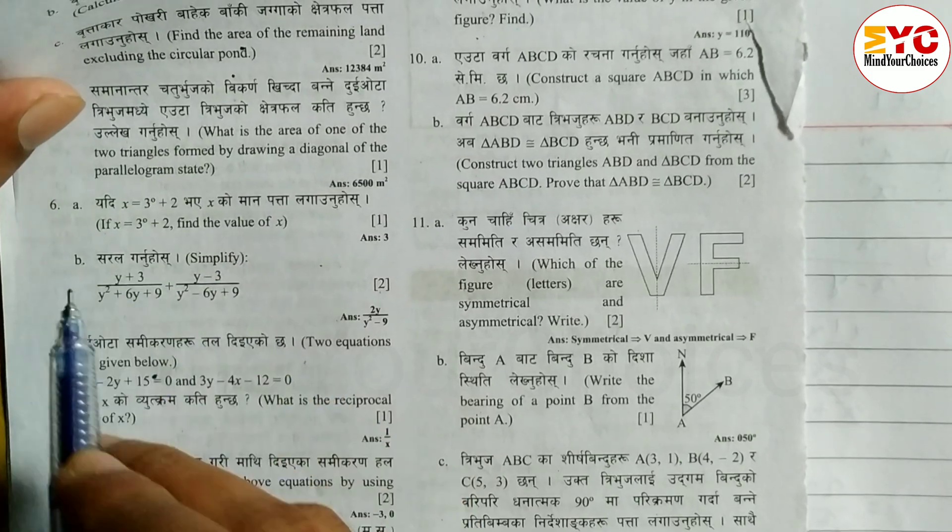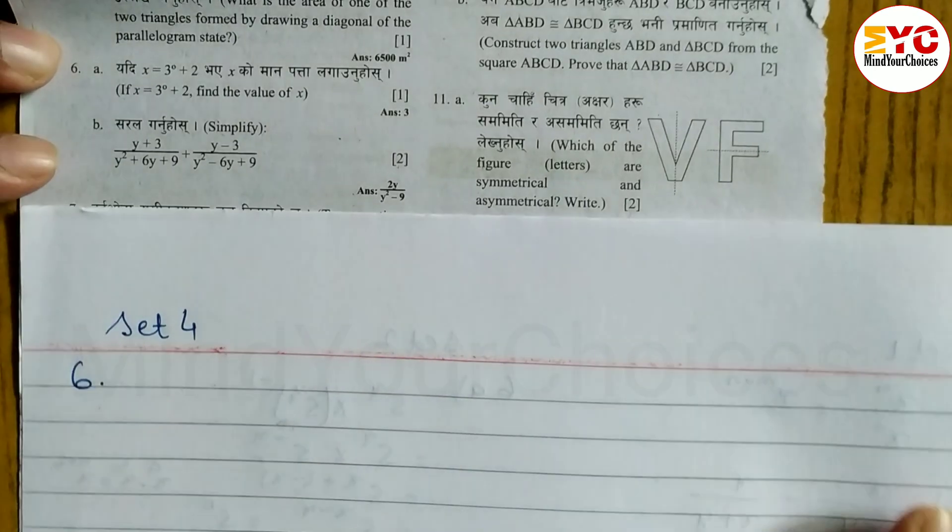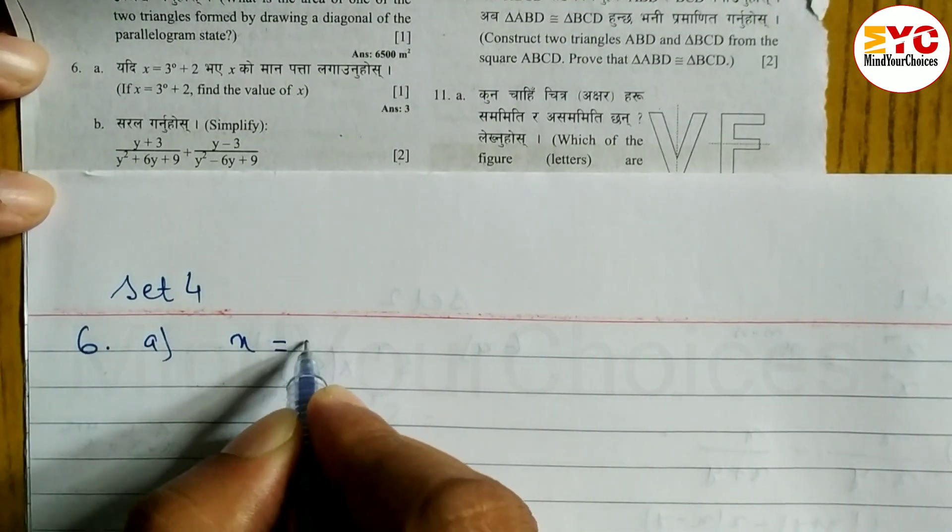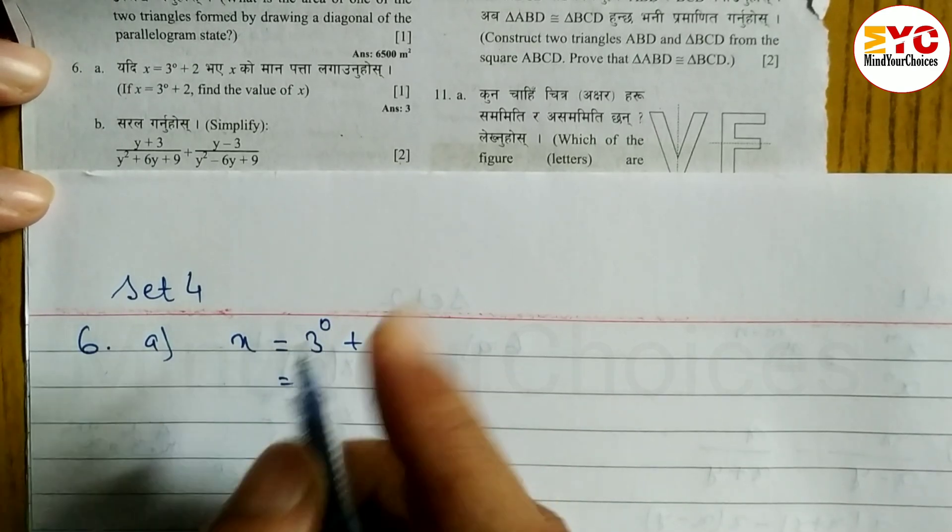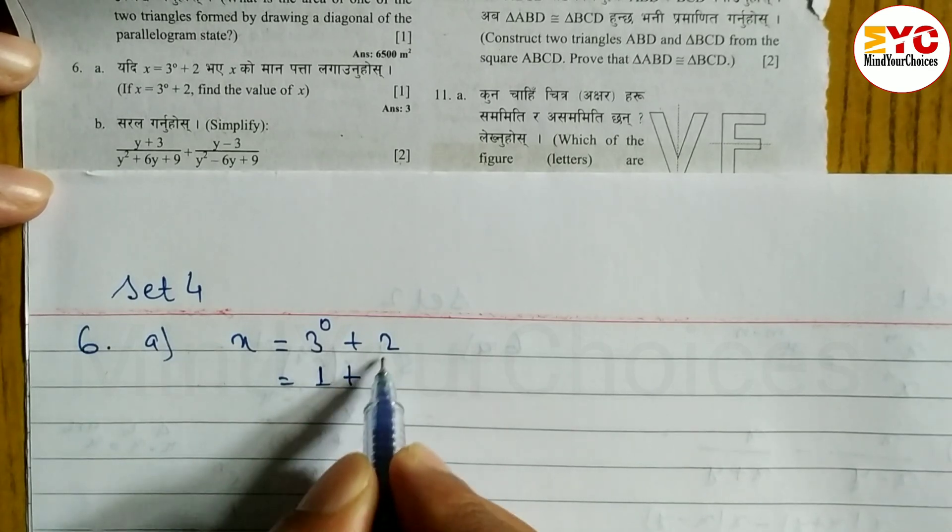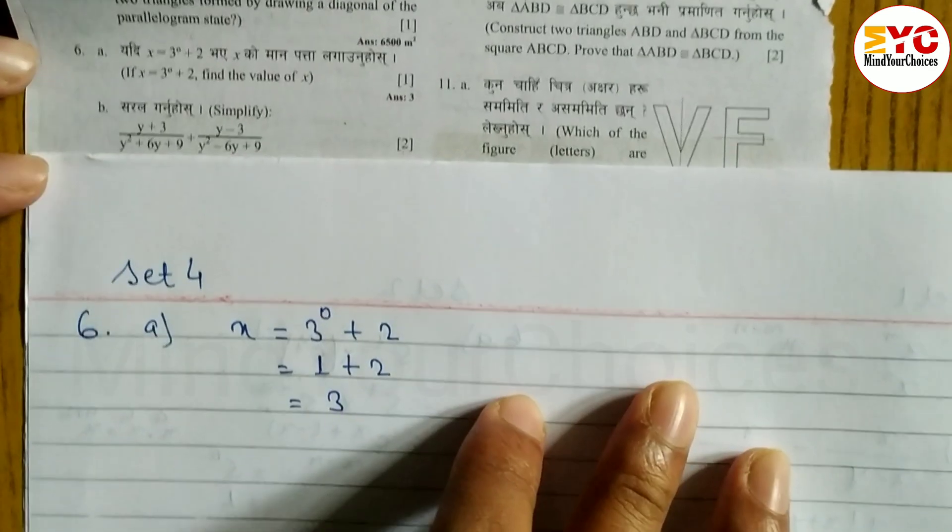To find the value of x, we need to simplify. This is worth 3 marks. In the question, x equals 3 power 0 plus 2. When any number has power 0, it equals 1. So 3 power 0 equals 1. When you add these 2 we get 3. So x equals 3.